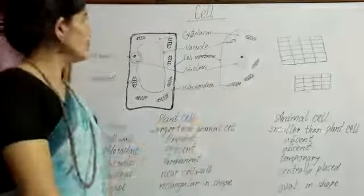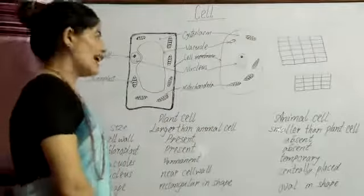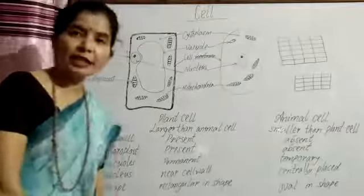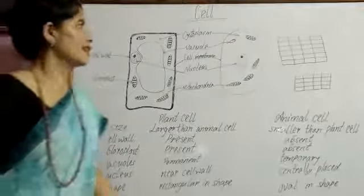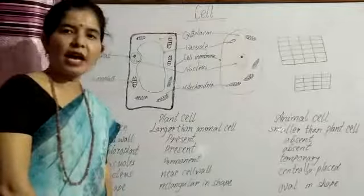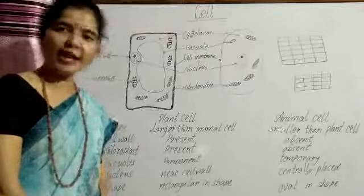So, here you can see plant cell and animal cell. All living things are made by cells. So, class, I hope you enjoyed today. Thank you.